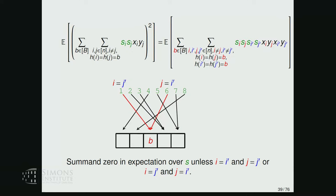Zero overlap is also zero. So the only possibility for the product of signs to be non-zero in expectation—that is, equal to one—is that either I equals I' and J equals J', or the other way around (crossed). These are the only two non-zero contributions.